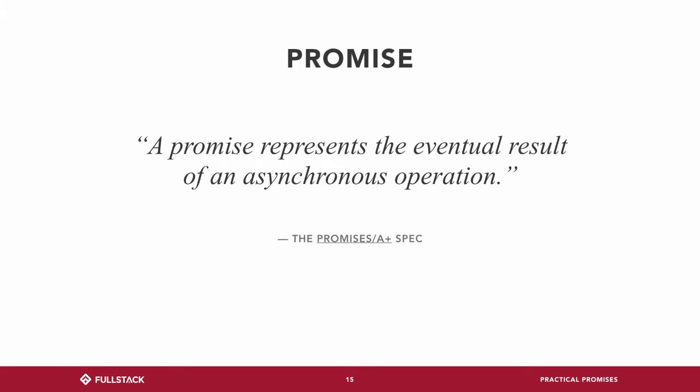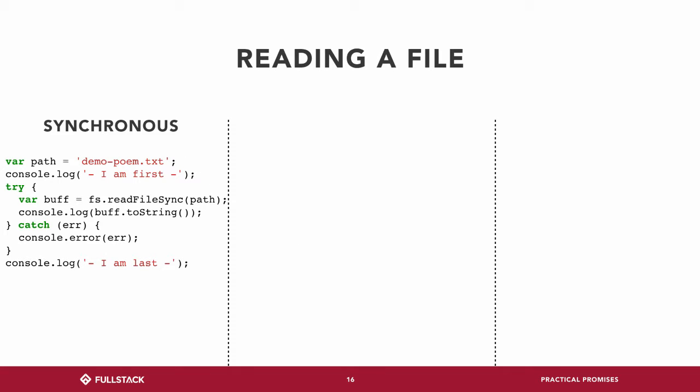In terms of the spec, a promise represents the eventual result of an asynchronous operation, and there are two different specifications for promises. One way to read a file is readFileSync, which is blocking — you could have your poem logged first, and you'd sit there and wait until you have the results of your file and the console.log happens last. We don't do this too often because it's blocking and you want to avoid that scenario.